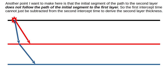Another point is that the initial segment of the path to the second layer does not follow the path of the initial segment to the first layer. So the first intercept time cannot just be subtracted from the second intercept time to derive the second layer thickness.